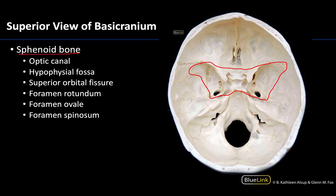We're going to start with the optic canals. These openings, as the name suggests, have to do with vision and head toward the orbit. The optic canals allow cranial nerve fibers to traverse to get to the orbit, or away from the globe back to the brain, as well as the ophthalmic arteries.